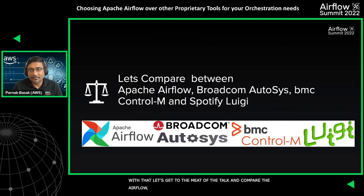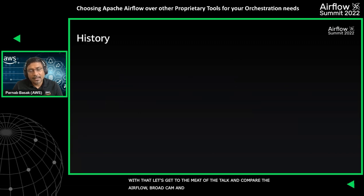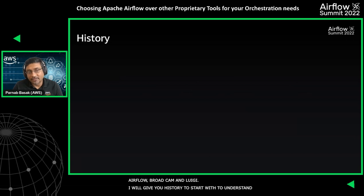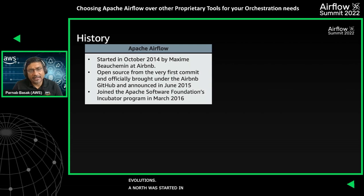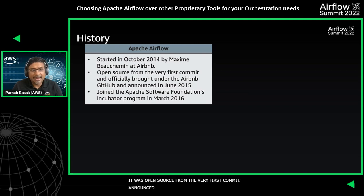Let's get to the meat of our talk and compare Apache Airflow, Broadcom Autosys, BMC Control-M, and Spotify's Luigi. Let me give you some history to start. Apache Airflow was started in October 2014 by Maxime Beauchemin at Airbnb. It was open source from the very first commit, officially brought under the Airbnb GitHub repository in June 2015, and joined the Apache Software Incubator program in March 2016.